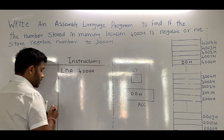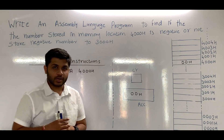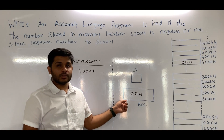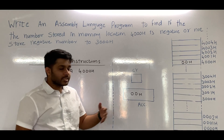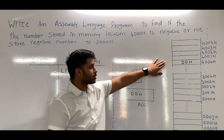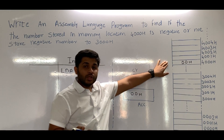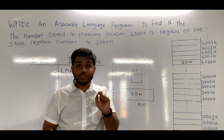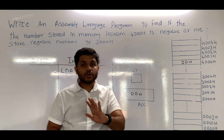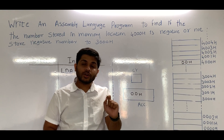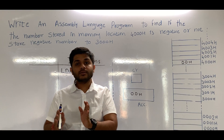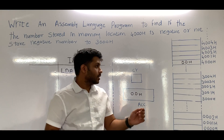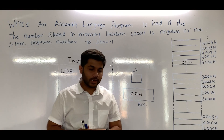After moving the data, we will check whether the number is positive or negative. But you know that 0 is neither positive nor negative. So there is a possibility that the data stored in the memory location can be 0. Before checking positive or negative, we have to check whether the number is 0 or not. If the number is not 0, we will check for positive or negative. If the number is 0, we will stop the program.